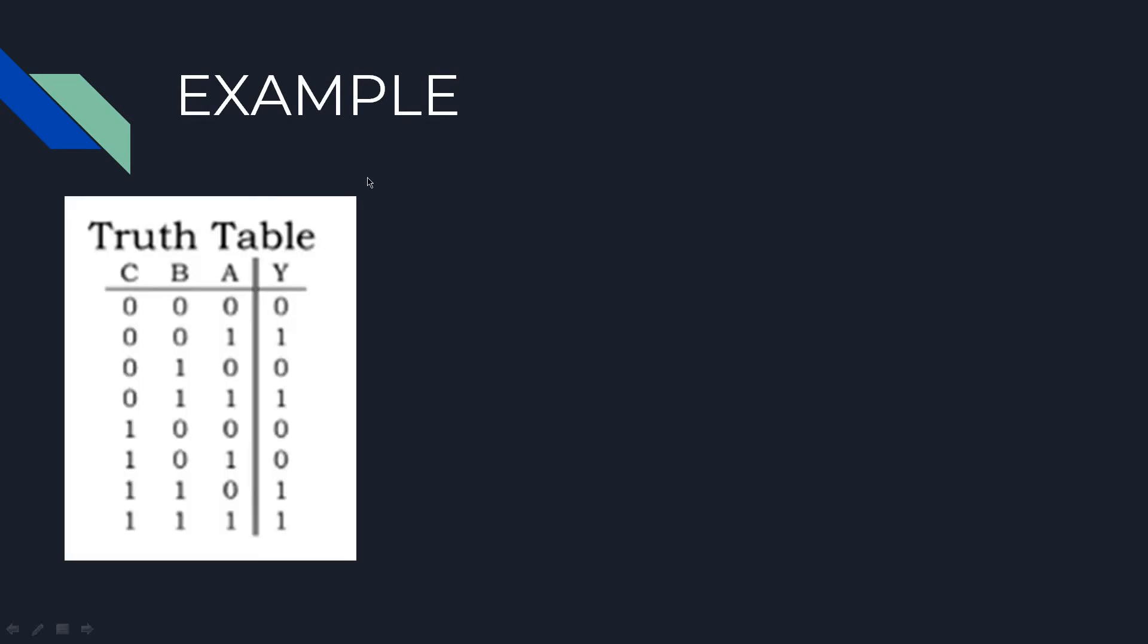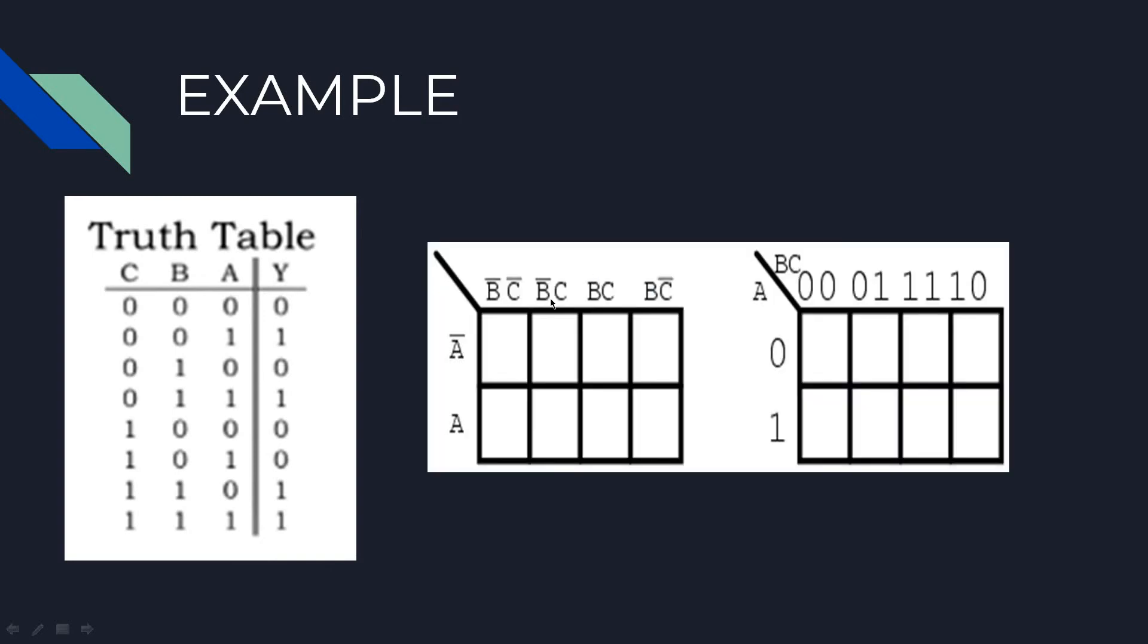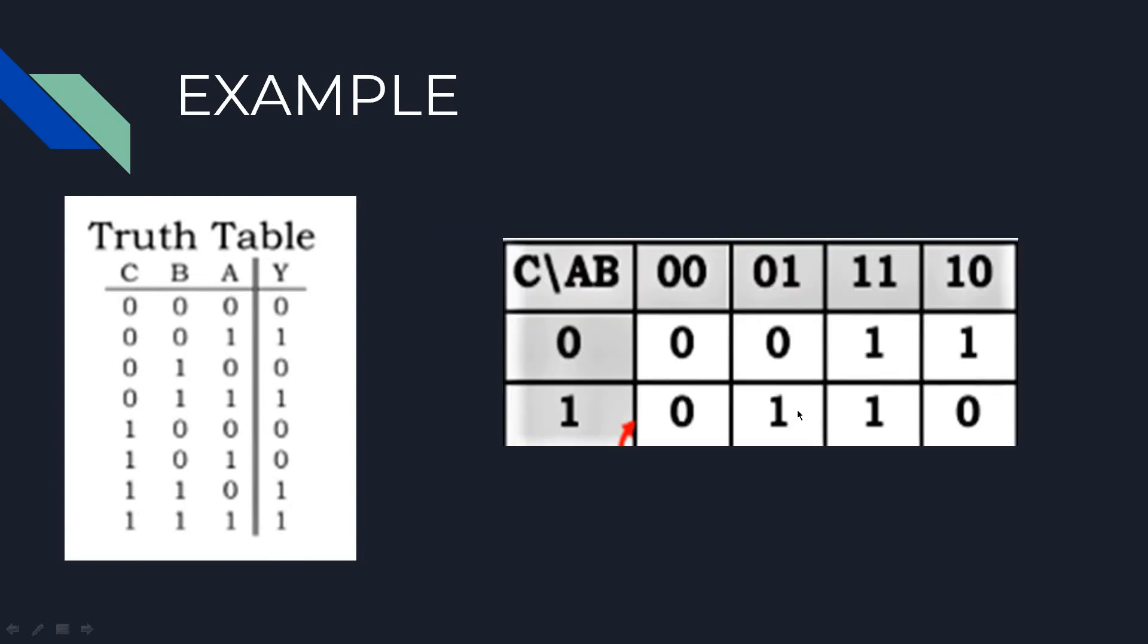Now let us take an example and simplify logic to understand K-map better. So this is the truth table. By seeing the truth table there are 3 input variables, so we use 3 variable K-map. And the entries are done like this.